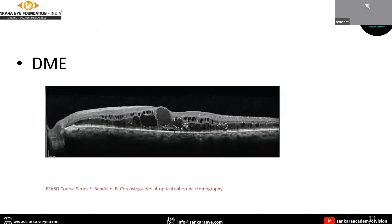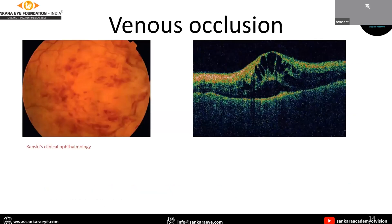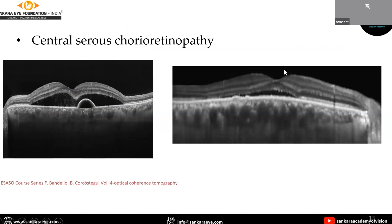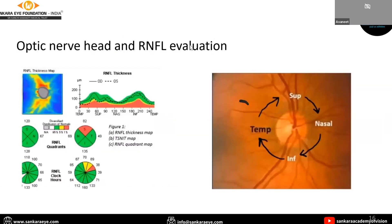OCT can be used in diabetic macular edema cases, where we can see cystoid spaces and accumulation of subretinal fluid. It can be used in cases of venous occlusion, where edema is visible. In central serous chorioretinopathy, we can see accumulation of subretinal fluid and thickening of the choroid in an acute CSC case. It can also be used for optic nerve head and retinal fiber layer evaluation in glaucoma.